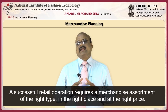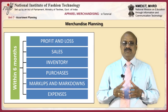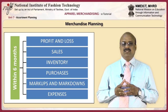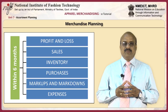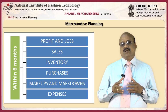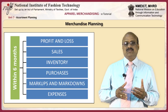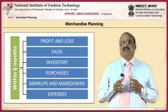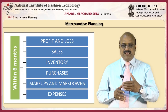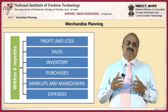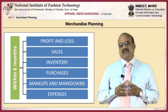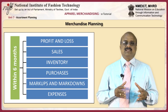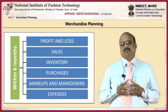A successful retail operation requires a merchandise assortment of the right type, in the right place, and at the right price. To accomplish this objective, activities such as profit and loss, sales inventory, purchases, markups, markdowns, and expenses must be planned at least six months in advance by buyers and managers. This plan is called a merchandise budget, also referred to as a six-month merchandise plan.